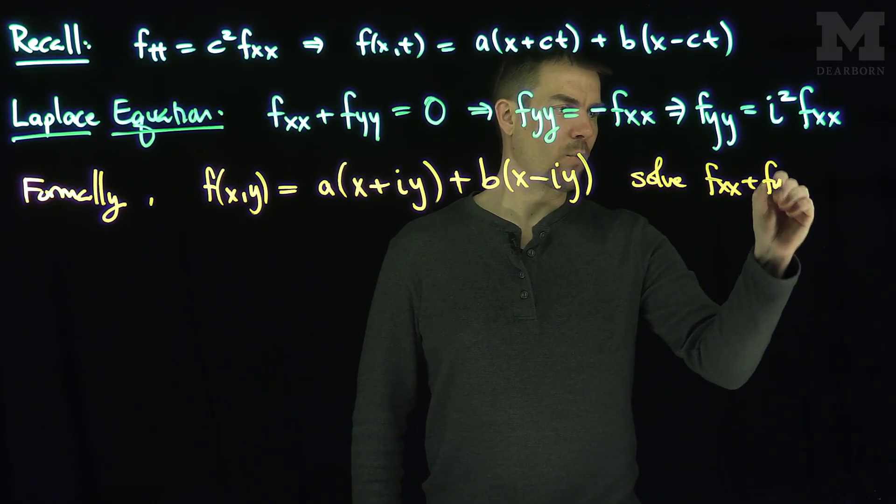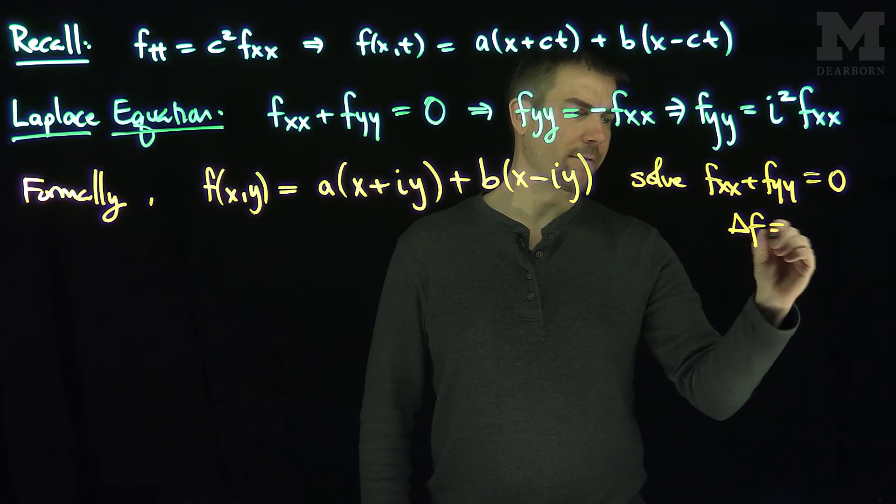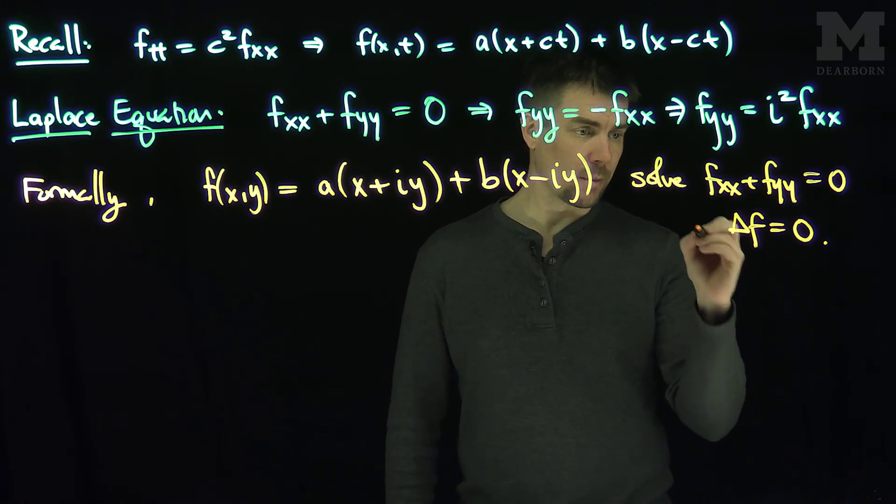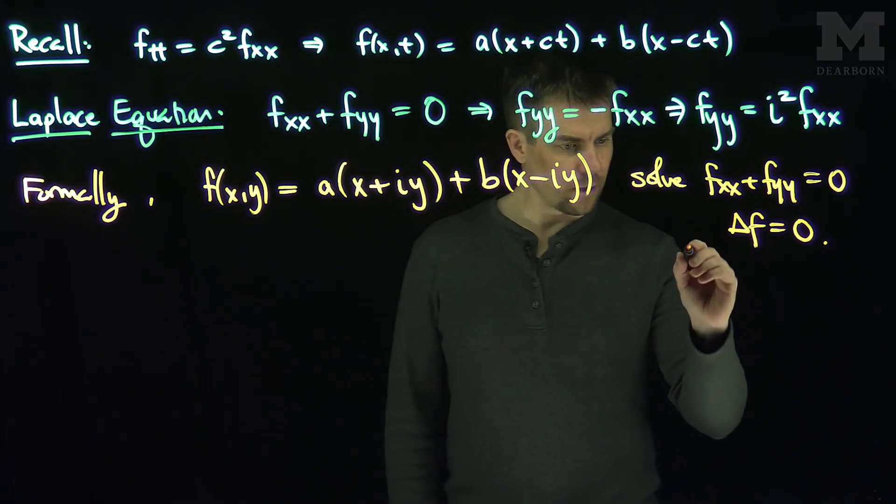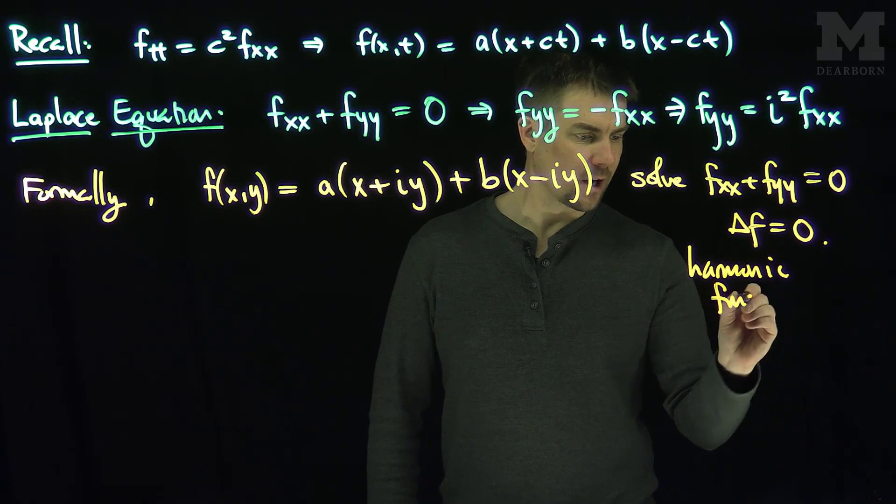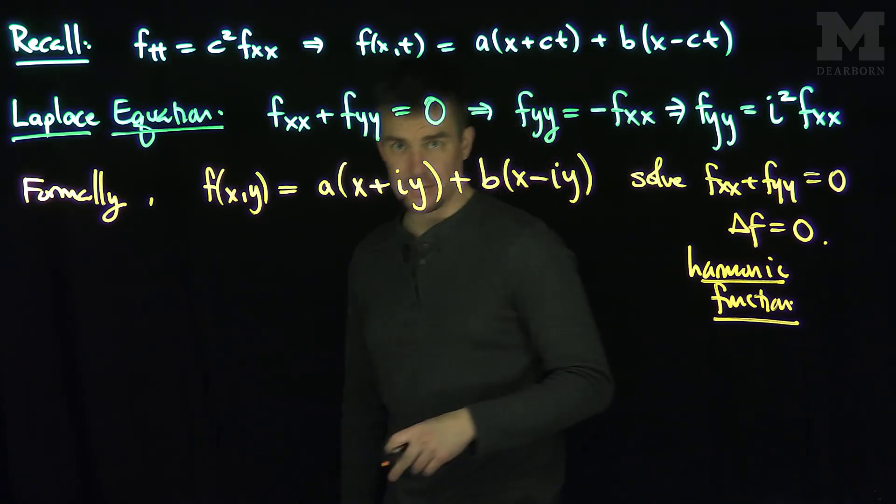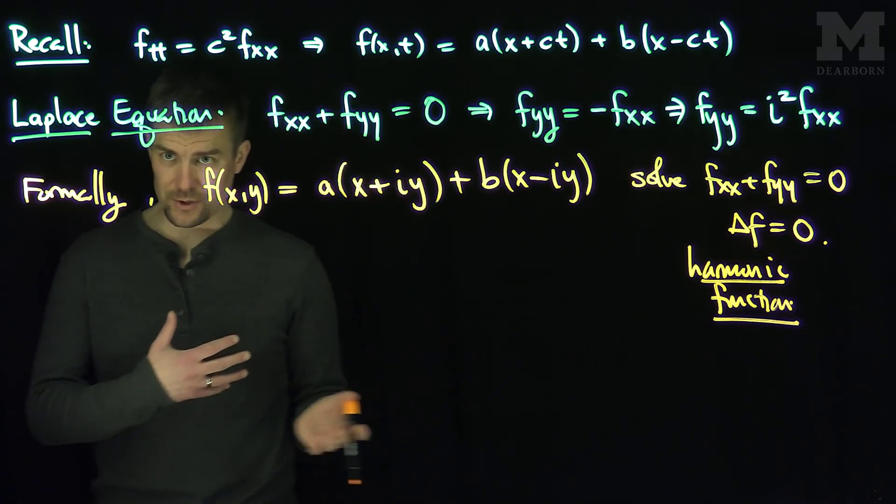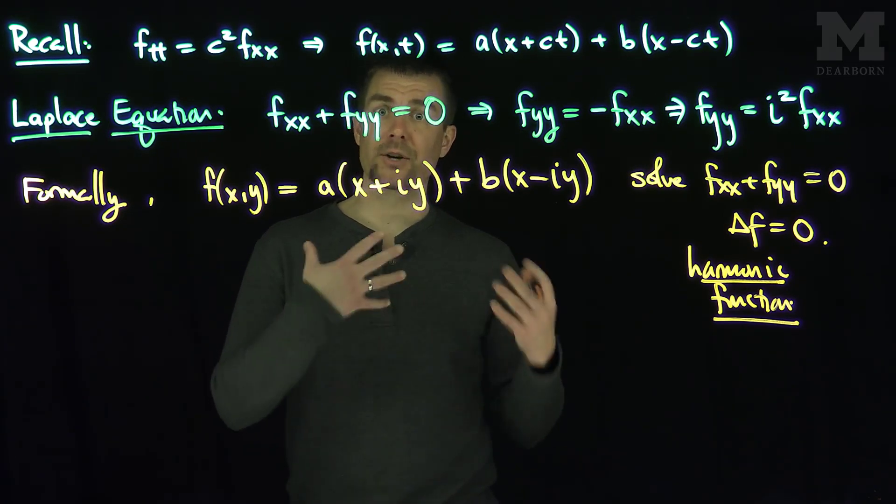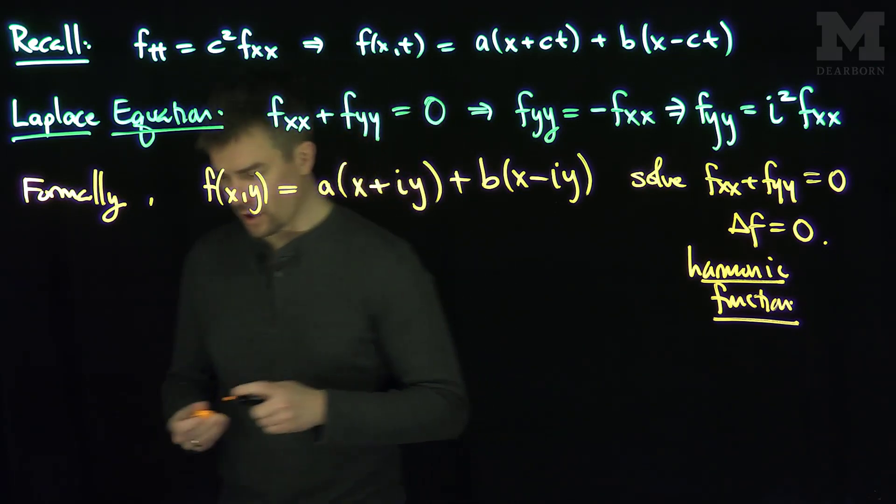So this formally solves the Laplace equation, f_xx plus f_yy equals zero, or namely Laplacian of f equals zero. These functions that satisfy this equation, the Laplace equation, are called harmonic functions. Harmonic functions occur almost everywhere in mathematics, from finance to physics to chemistry to biology. Because the Laplace equation can be realized as saying the divergence of the gradient of f is equal to zero. So it's a measure of the divergence, or in other words the flux, of a gradient vector field.